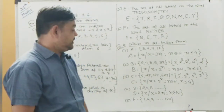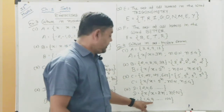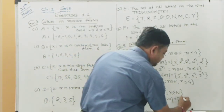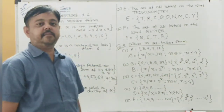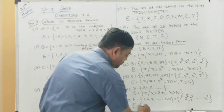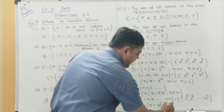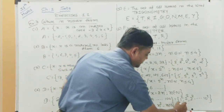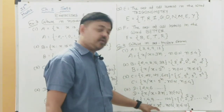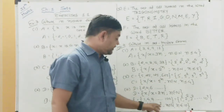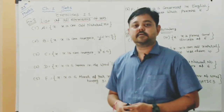Set E = {1, 4, 9, ..., 100}. Observe: 1 = 1², 4 = 2², 9 = 3², up to 100 = 10². The power is the same (square), the base changes. So Set E = {x : x = n², n ∈ N and n ≤ 10}. Substituting n = 1 gives 1², n = 2 gives 4, up to n = 10 gives 100.